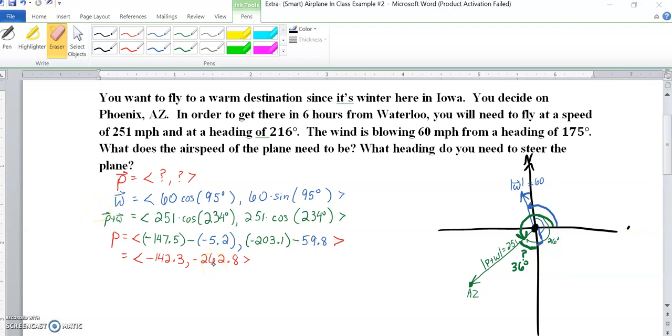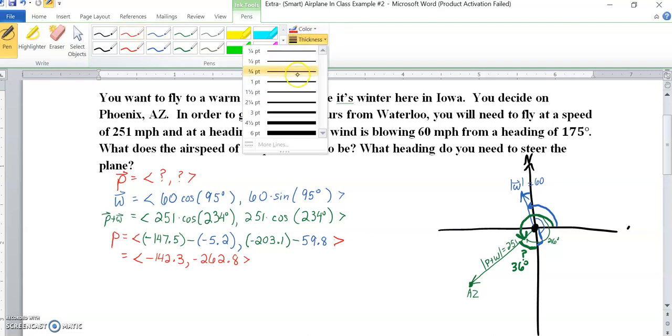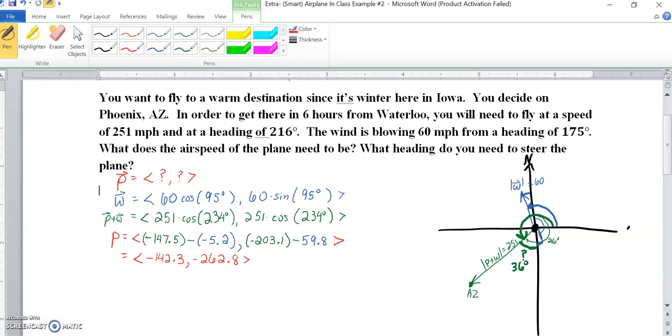So when you took those two numbers and subtract it, because P plus W minus W gives us P, we got our negative 262. So at that point, we do have our plane vector of just the plane itself, which is our airspeed and heading. And what we can do with that is say, okay, we need to go, here's our resulting vector, P plus W. We want to know on kind of more of maybe a side graph here. So here's just P, and to find that, we went negative, so 142.3 in this direction, the negative of X, and 262.8 in the Y direction.